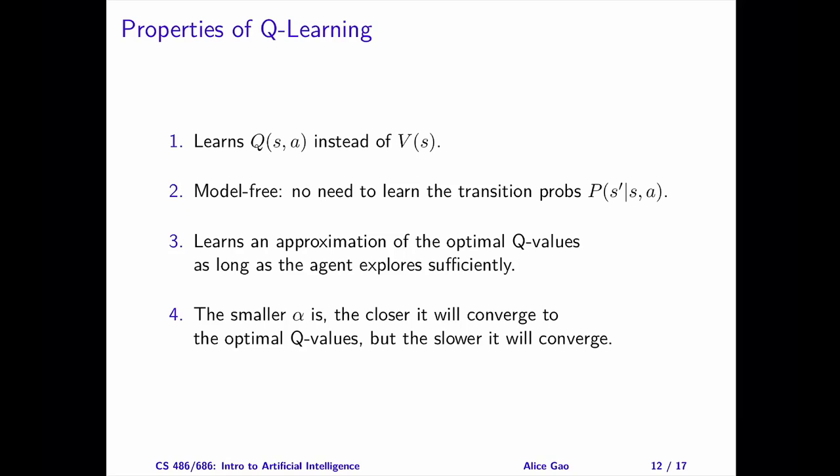We can improve the convergence by adjusting the learning rate alpha. The smaller alpha is, the closer it will converge to the optimum Q values, but the slower it will converge.